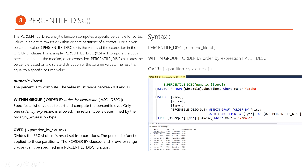Now I will discuss the difference between PERCENTILE_DISC and PERCENTILE_CONT. In PERCENTILE_CONT, the column used in the ORDER BY clause must be an integer type or float type — we cannot use any string data type. But in PERCENTILE_DISC, we can apply any data type column. So data type restrictions do not apply in this function. For example, if we use a name column, which is nvarchar, we can simply apply it in the ORDER BY clause with no restrictions.